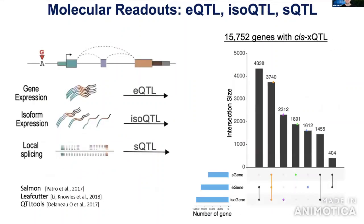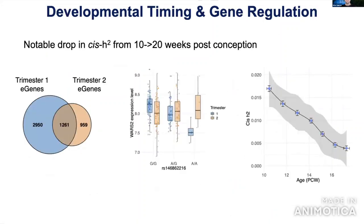We can also contrast multiple molecular readouts — not only eQTLs but also isoform expression QTLs and splicing QTLs — providing about 5,000 more genes with transcriptome-wide significant QTLs. Given our developmental samples spanning both trimesters, we found remarkably many more e-genes in the first trimester than the second trimester, even with completely matched sample sizes.